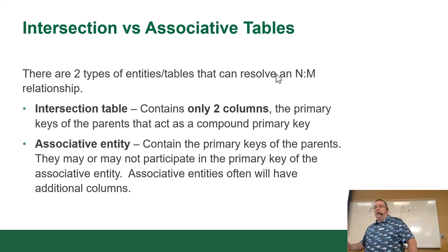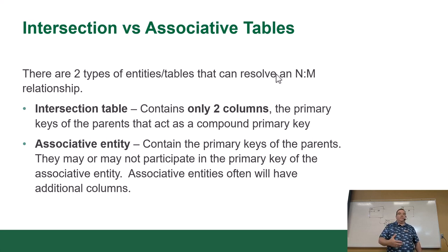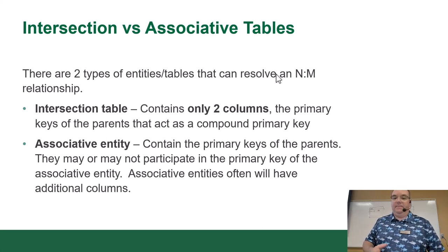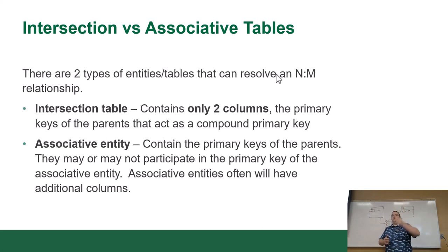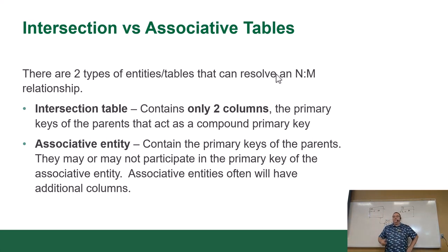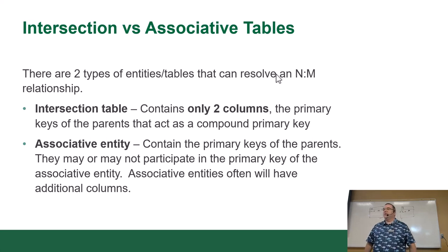Both types are valid. I've actually created a few databases with intersection tables recently for applications that did not require data governance for specific things. Basically, assume that you're working with associative entities because the odds are that junction is going to have more than just two columns in it.